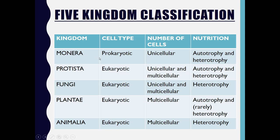Kingdom Monera consists of organisms which are only prokaryotic and unicellular, and are generally autotrophic, though they may also be heterotrophic.